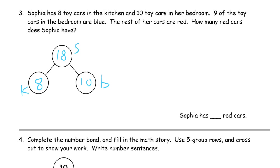So we need 10 for the cars in her bedroom: 1, 2, 3, 4, 5, 6, 7, 8, 9, 10. And eight for the ones in her kitchen: 1, 2, 3, 4, 5, 6, 7, 8.